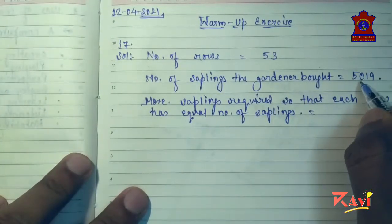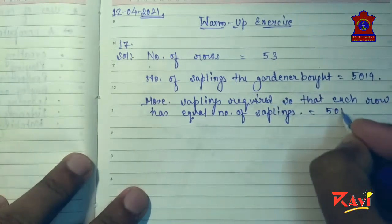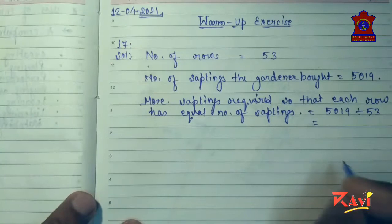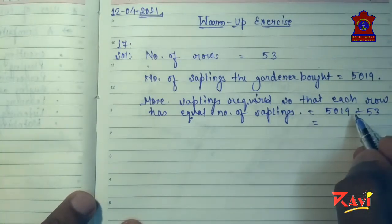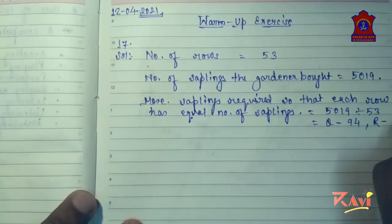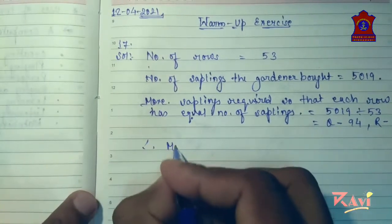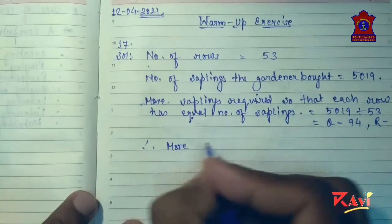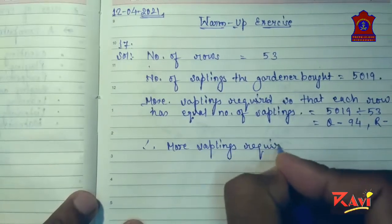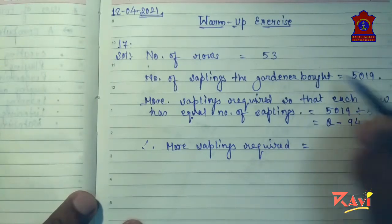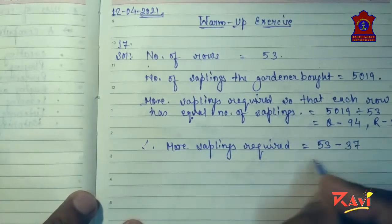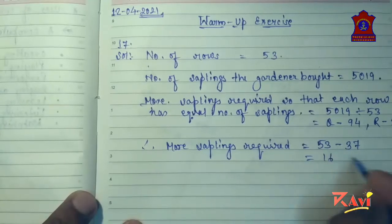To do this we will divide 5019 by 53. After division we will get the quotient as 94 and the remainder as 37. Therefore more saplings required equals to 53 minus 37 which is 16 saplings.